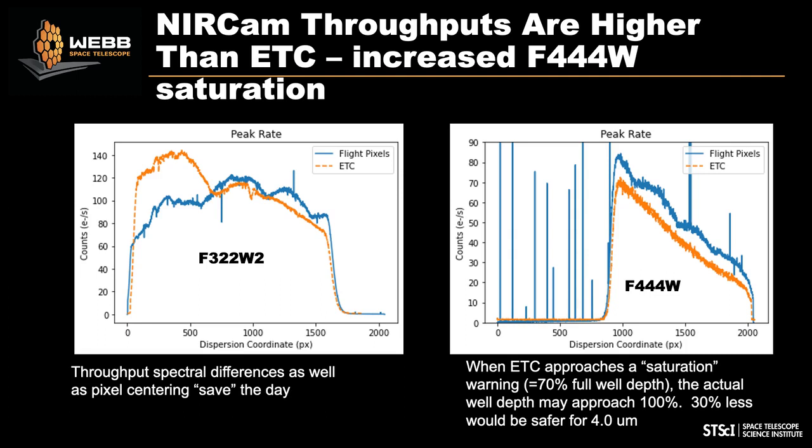The flip side is increased chance of saturation. The left plot shows what happens at the shorter filter F322W2. The ETC predicts the worst case of light perfectly centered on a pixel, but the real measured case is not perfectly centered, so it should be okay with that filter. For the long wavelength filter, peak rates are higher than the ETC, so be more careful there. Fortunately the ETC has a built-in buffer — the saturation warning triggers at 70% well depth. If you're worried about nonlinear effects or saturation, you may want to consider reducing the number of groups by about 30% less than the saturation warning.